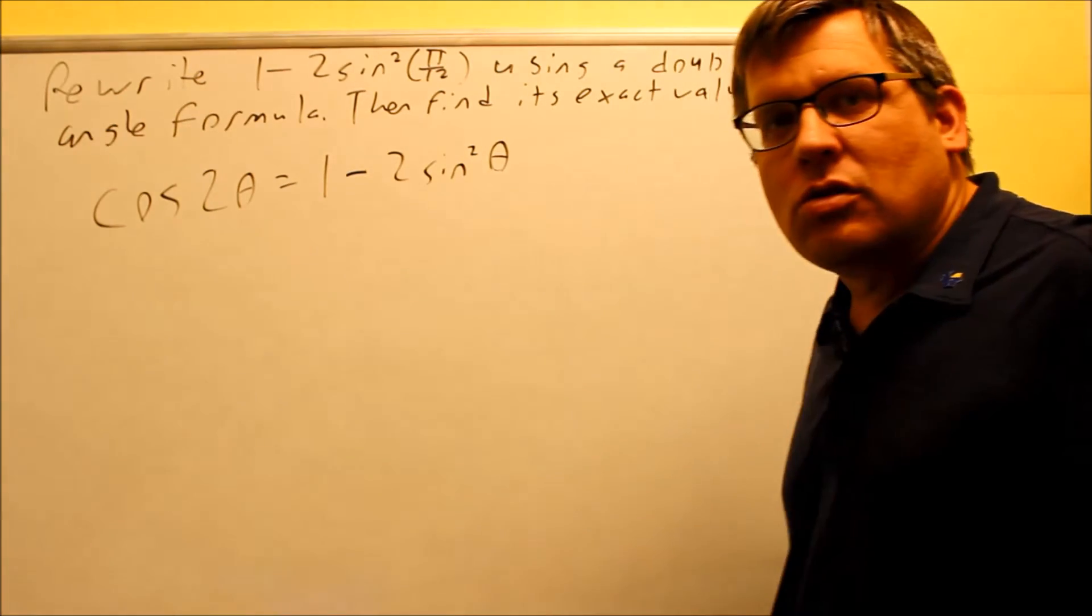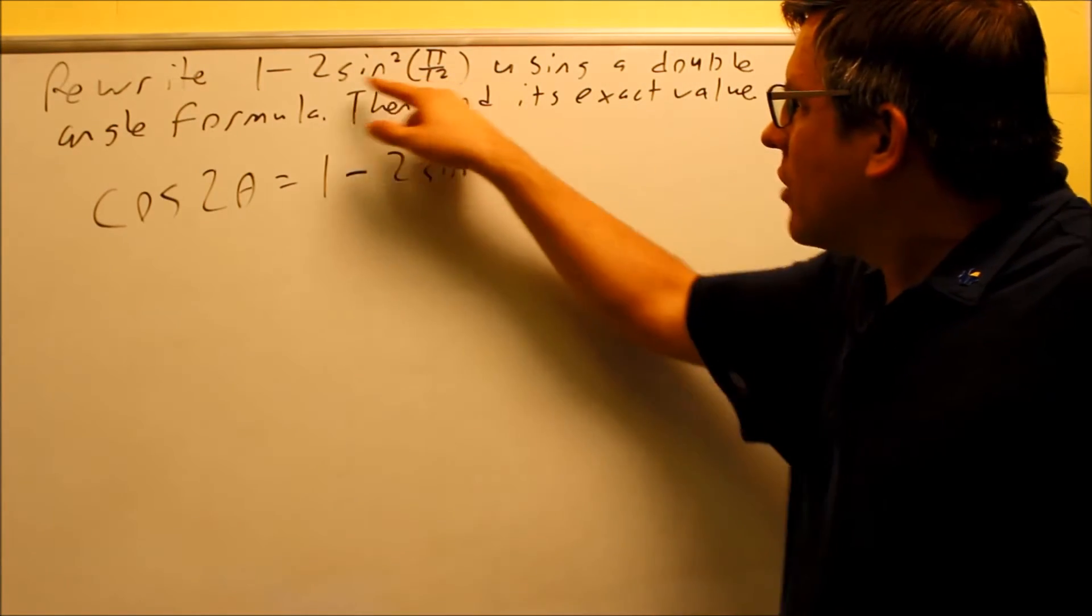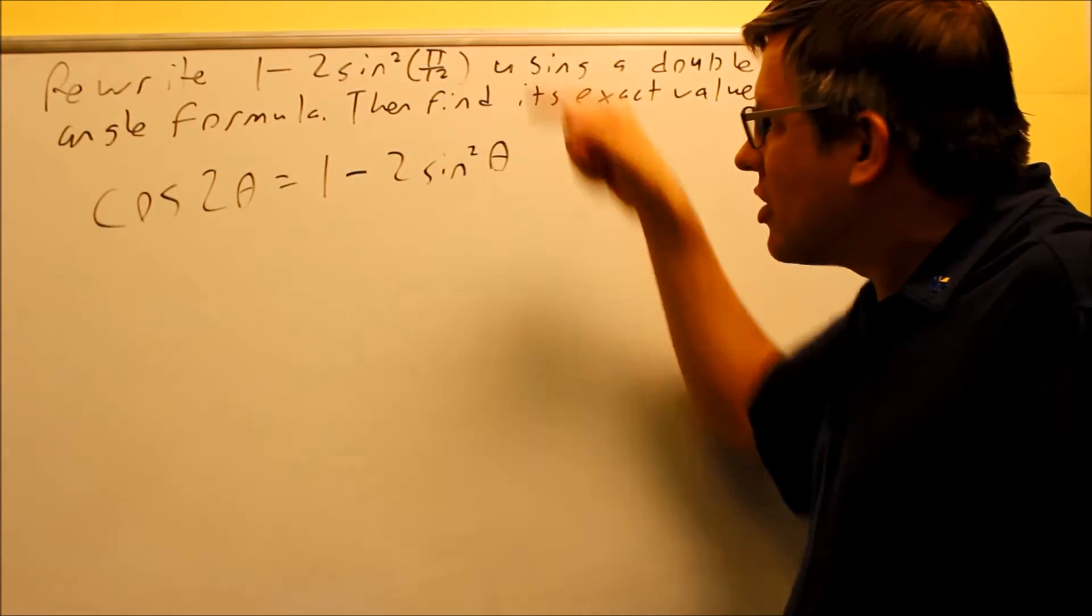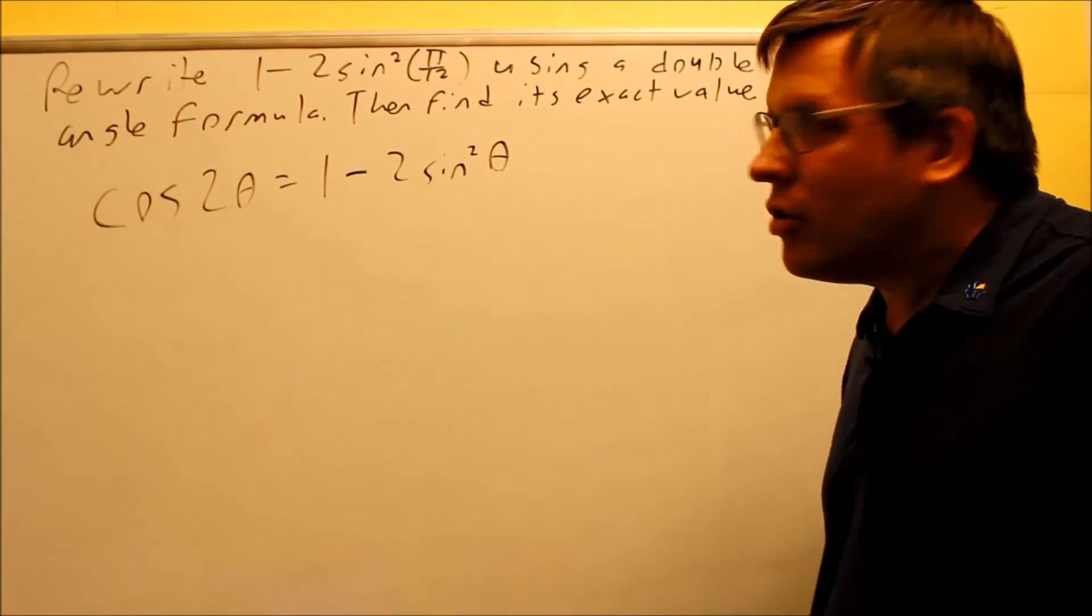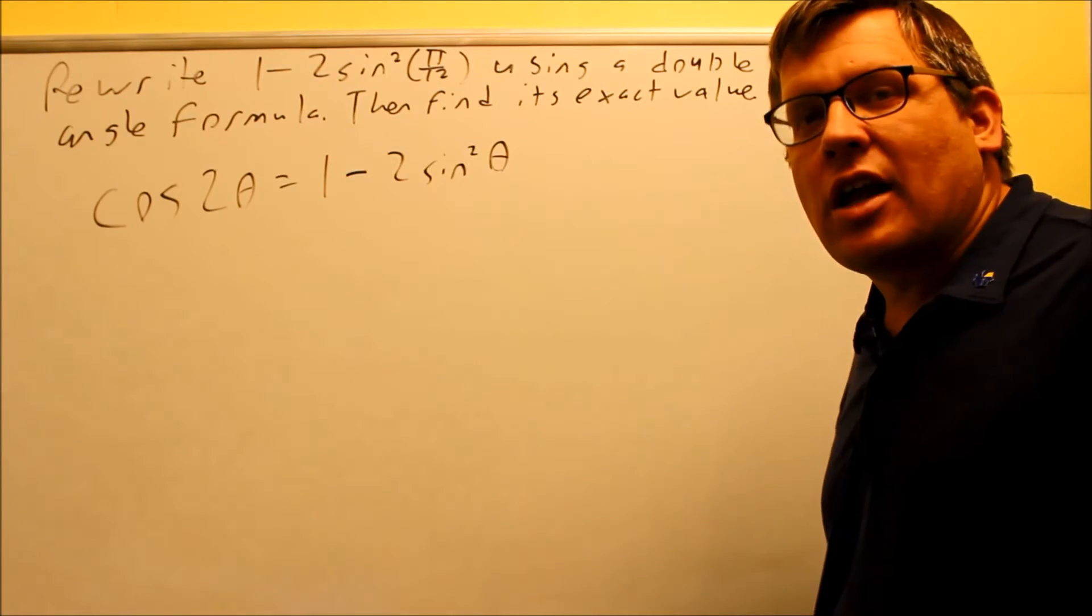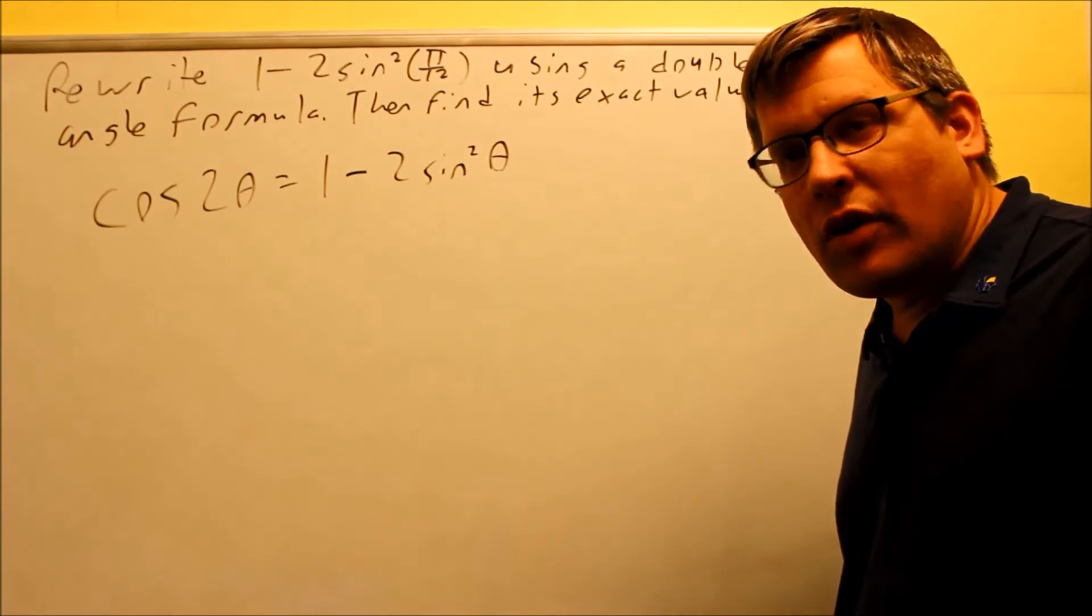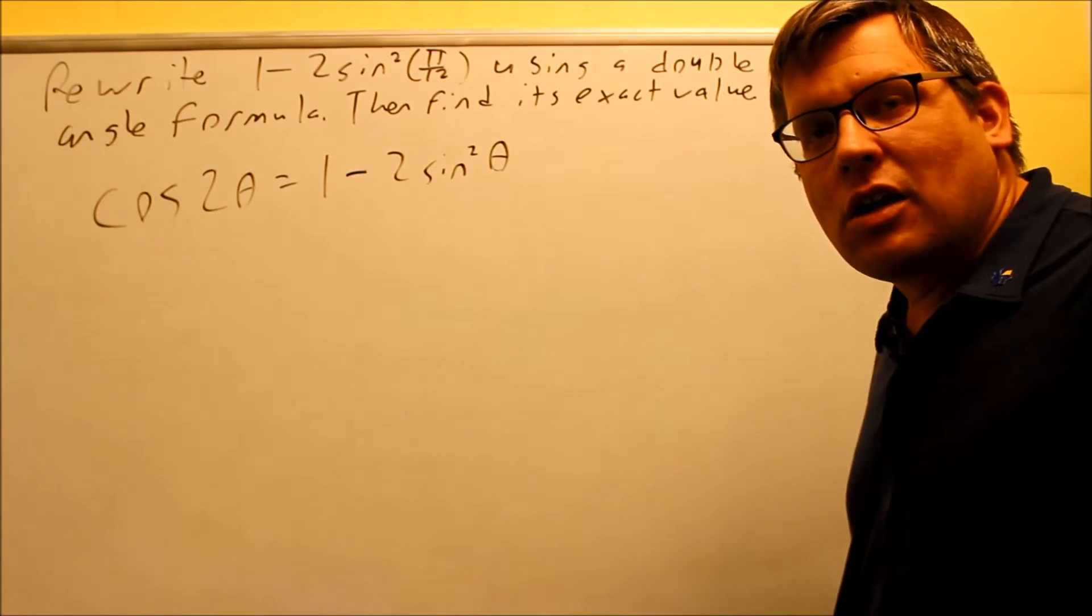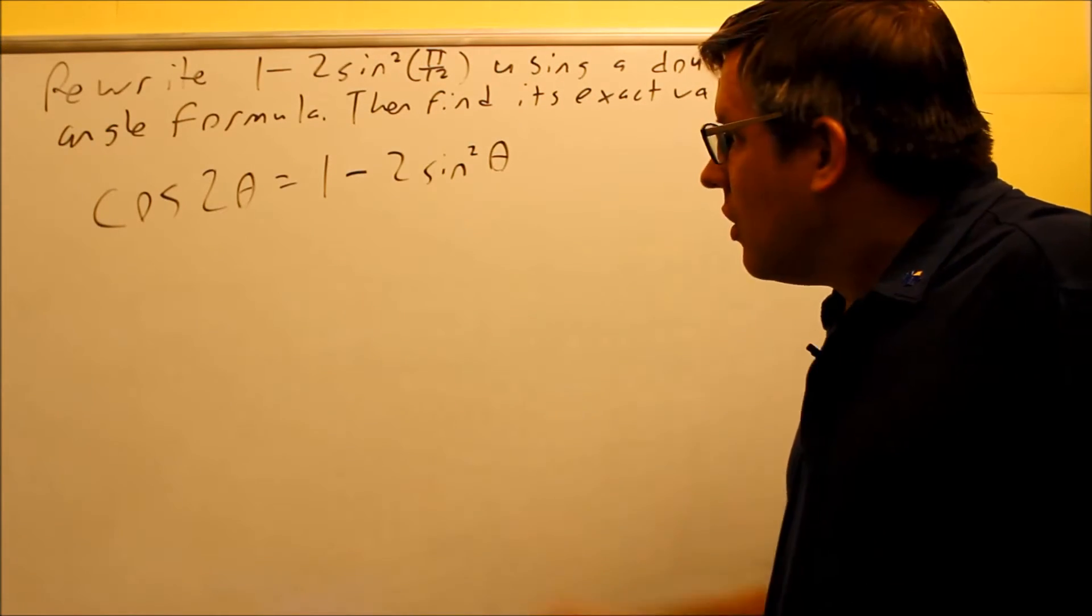If I tried to do this on my own with a calculator, I could get an approximation, but we want to have the exact value. π over 12 is not an angle that's on our unit circle, however, if I apply this formula, it will take me into something that I can get off of my table.